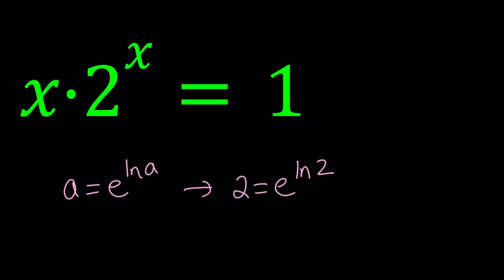So we're going to go ahead and replace 2 with that. That's going to give us x times e to the power ln 2 to the power x, and that equals 1.